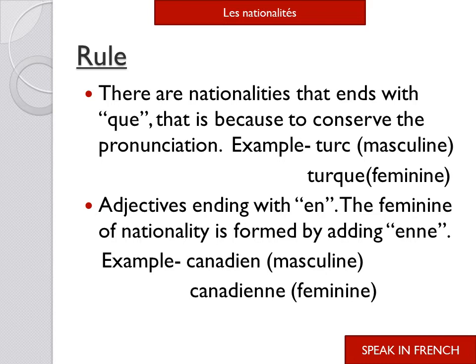Rule number four: adjectives ending in 'en'. The feminine of that nationality is formed by adding 'enne'. For example: canadien — it is a masculine nationality; canadienne — it is the feminine nationality. You can see that the word canadien ends in 'en' in the masculine, and to convert it to feminine, we add 'ne' to get canadienne.